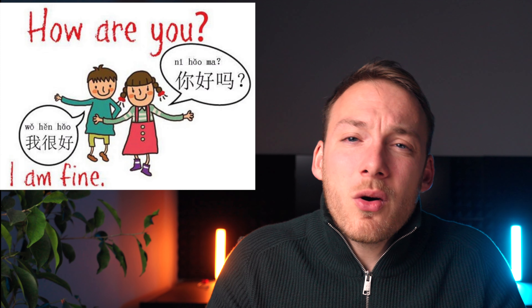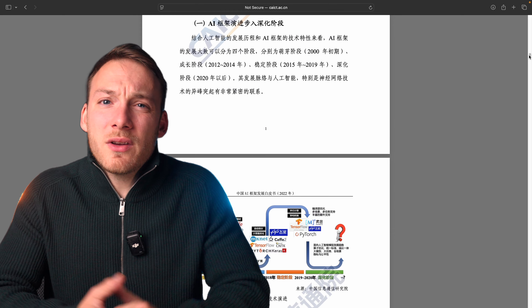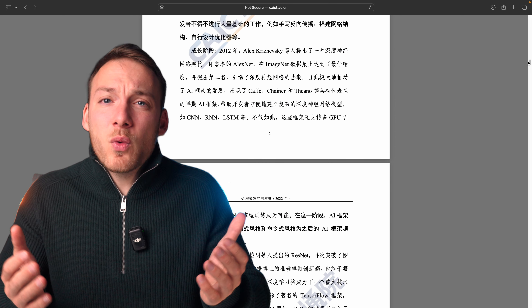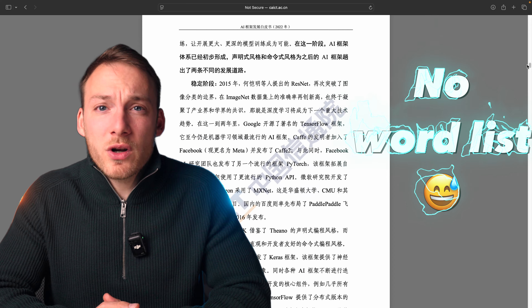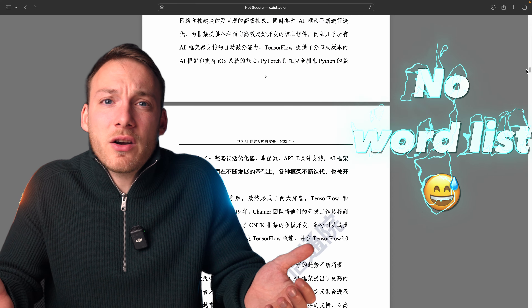One way to learn languages really fast is to read articles in the language that you're learning. When I started to learn Chinese, I was either forced to read really boring standard articles, or I had to try to find really interesting articles myself. But these were often way too difficult and of a higher reading level, and even worse, they did not include a word list that helped me understand the article. So let's look at how ChatGPT can help create or transform an article you know and like into an article that helps you learn the target language.